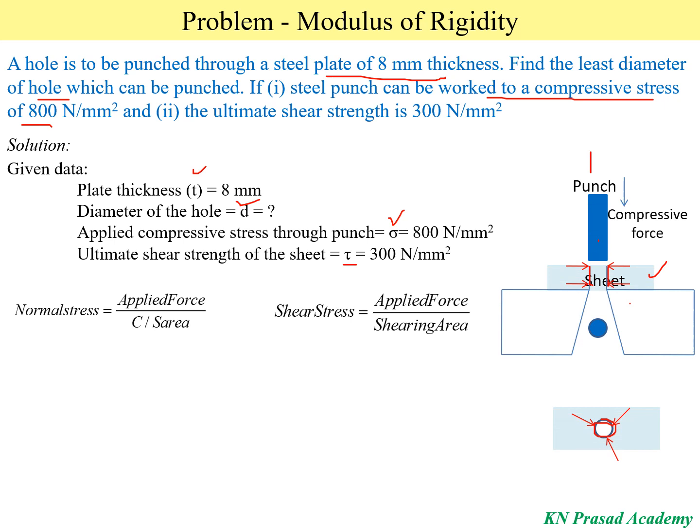Here we are applying normal stresses, that is compressive stresses. First we determine: compressive stress equals applied force divided by the cross-sectional area of the punch. Similarly, shear stress equals the applied shear force divided by the shearing area.